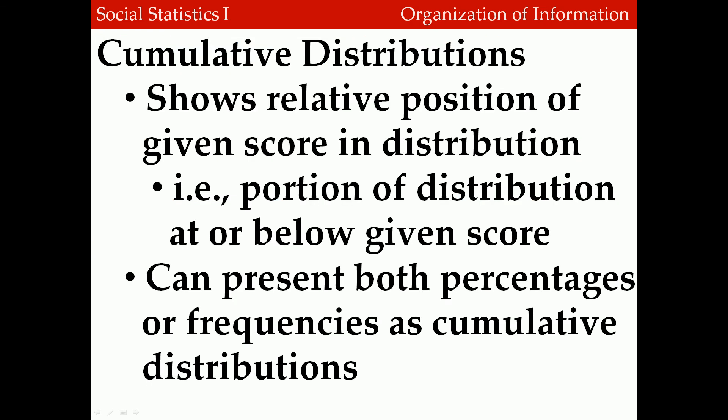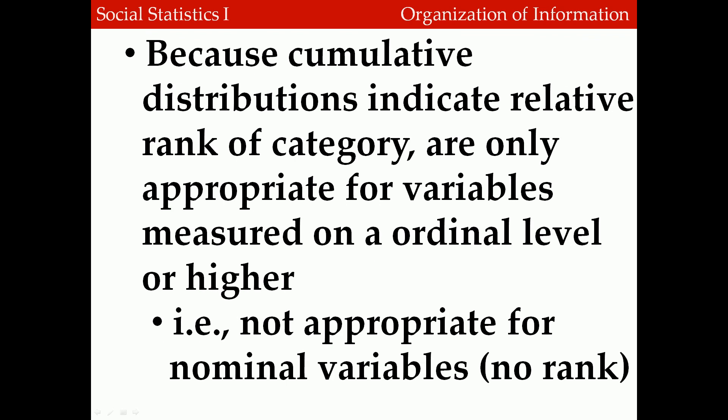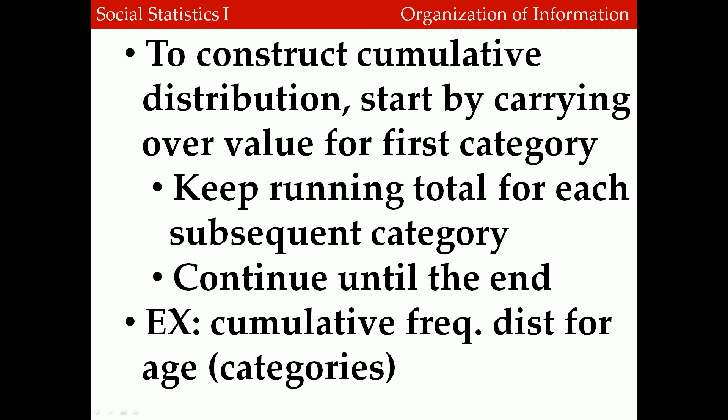Once we've created percentages and frequencies, we can create cumulative distributions. Cumulative distributions show us the relative position of a given score in a distribution — that is, the proportion of the distribution at or below a given score. We can use either percentages or frequencies in cumulative distributions. However, because cumulative distributions indicate the relative rank of a category, they're only appropriate for variables measured on an ordinal level of measurement or higher. They're not appropriate for nominal variables because those variables have no ranking. To construct a cumulative distribution, we start by carrying over the value of the first category and keep a running total by adding the value of the next category, continuing until we run out of categories.